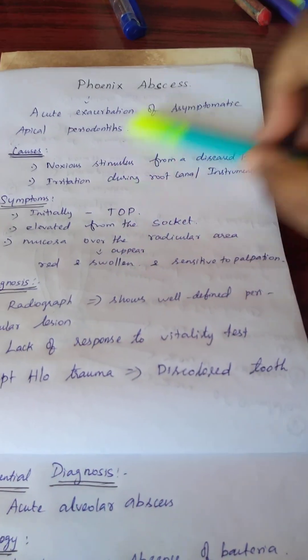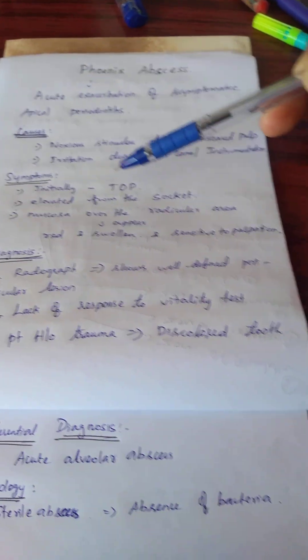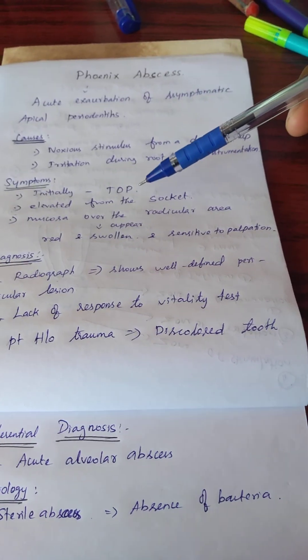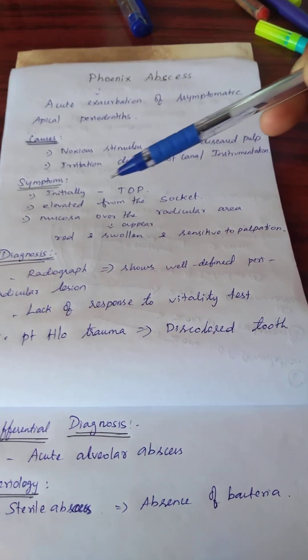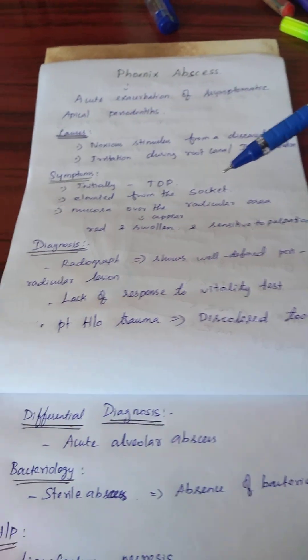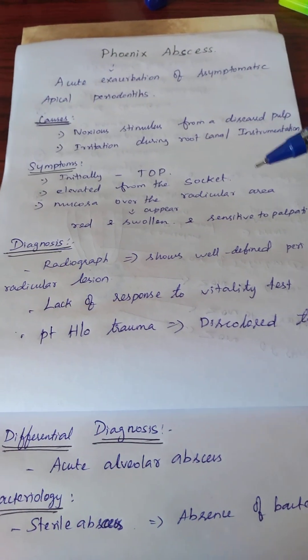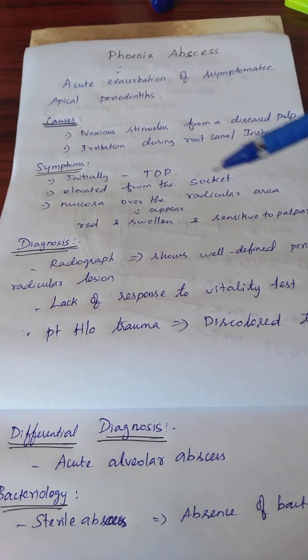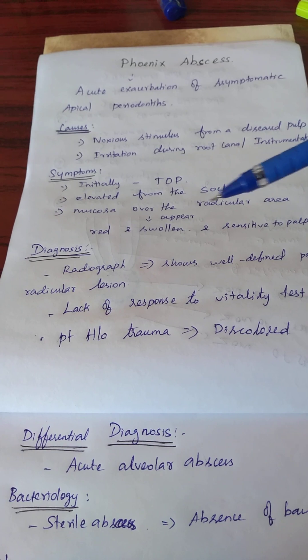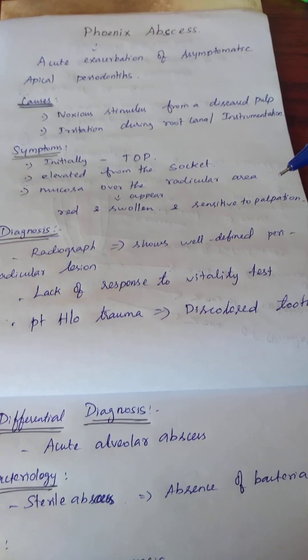Symptoms: initially, tenderness on palpation is present, and the tooth appears elevated from the socket. The mucosa over the radicular area appears red, swollen, and sensitive to palpation.